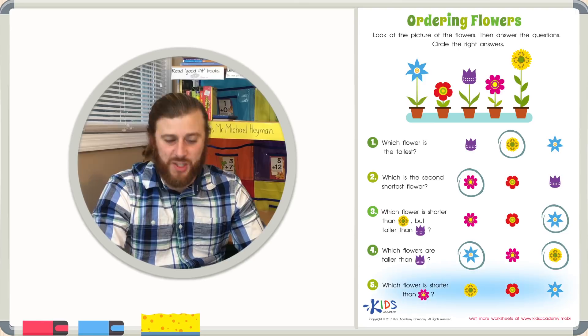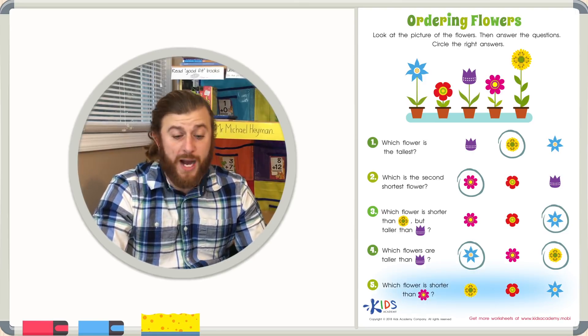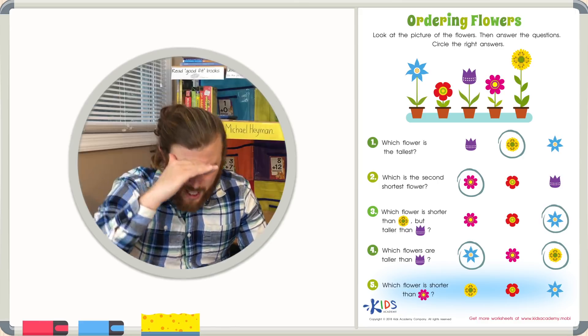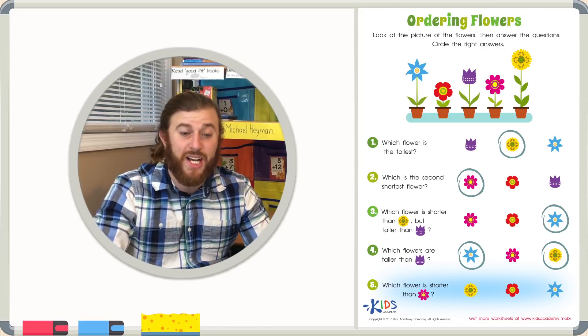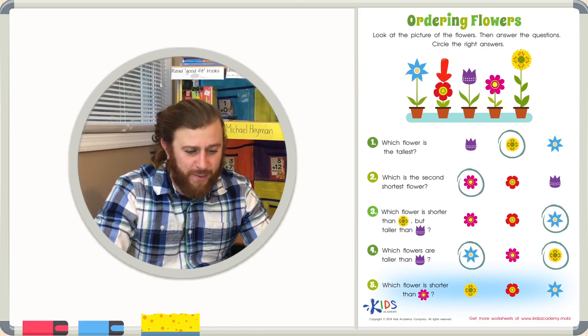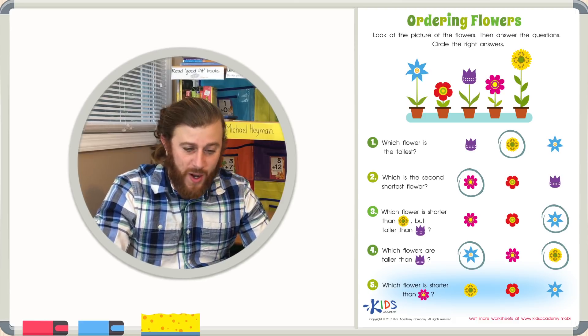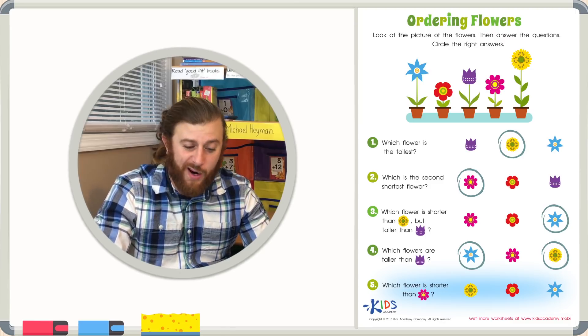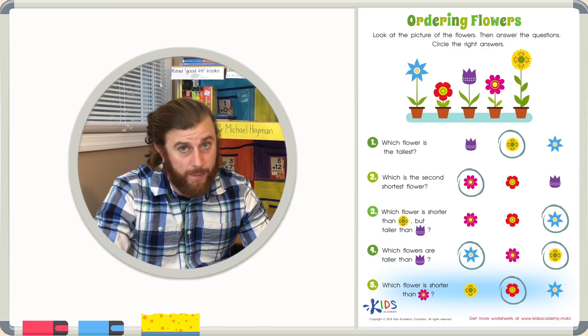Let's go ahead and look at our last question. Which flower is shorter than the pink flower? Well, if you look carefully at the worksheet, you can see that only the red flower is shorter than the pink flower. All of the other flowers are taller than the pink flower, making the red flower the only flower that is shorter.